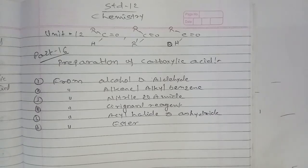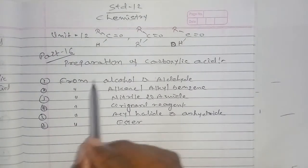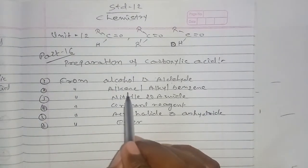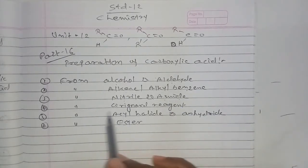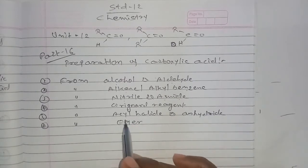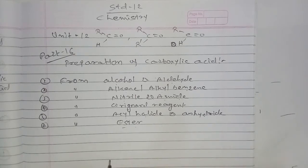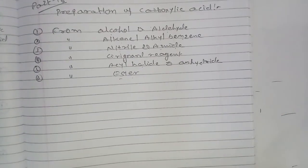Standard 12 chemistry, Unit 12: Aldehyde, Ketone and Carboxylic Acid, Part 16. Here we discuss the preparation of carboxylic acid — from alcohol and aldehyde, from alkene or alkyl benzene, from nitrile and amide, from Grignard reagent, from acyl halide and anhydride, and from ester.